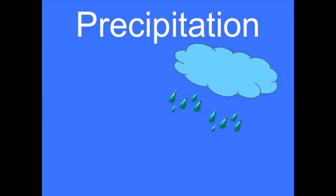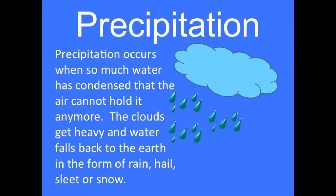Precipitation occurs when so much water has condensed that the air cannot hold it anymore. The clouds get heavy and water falls back to the earth in the form of rain, hail, sleet or snow.